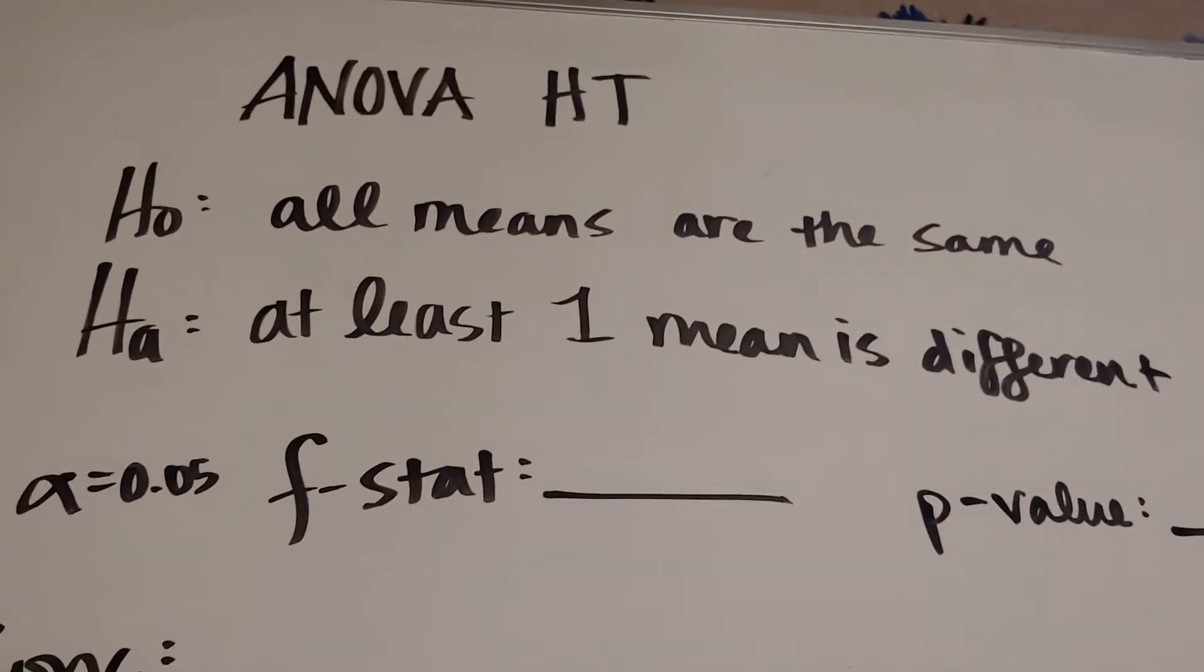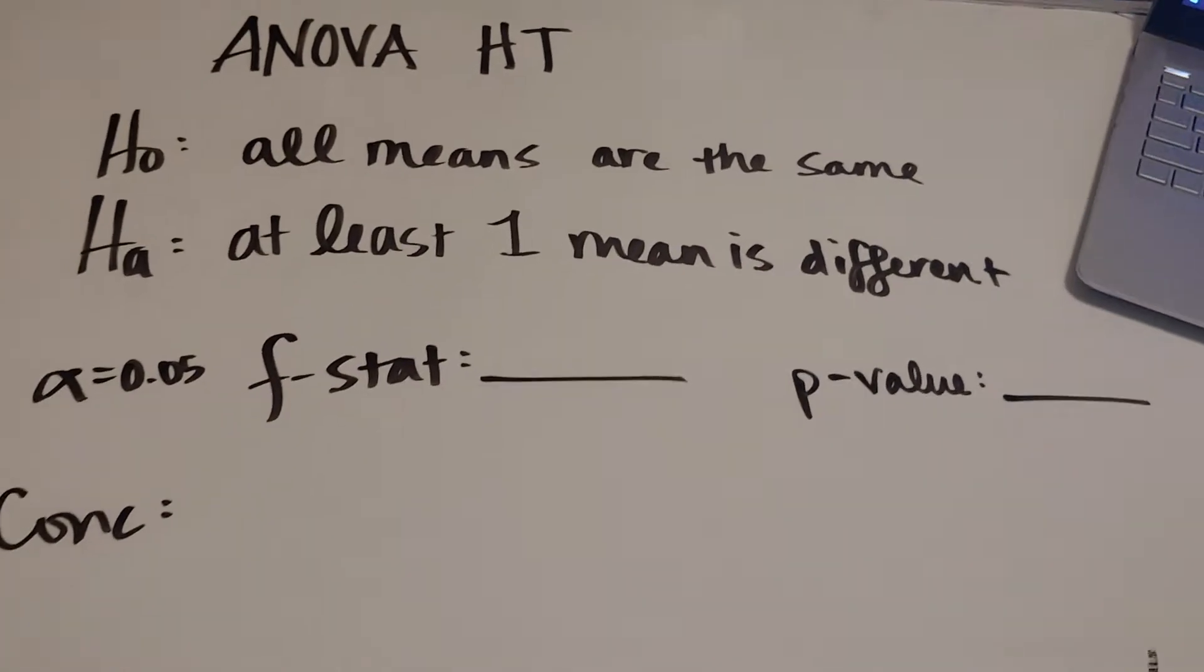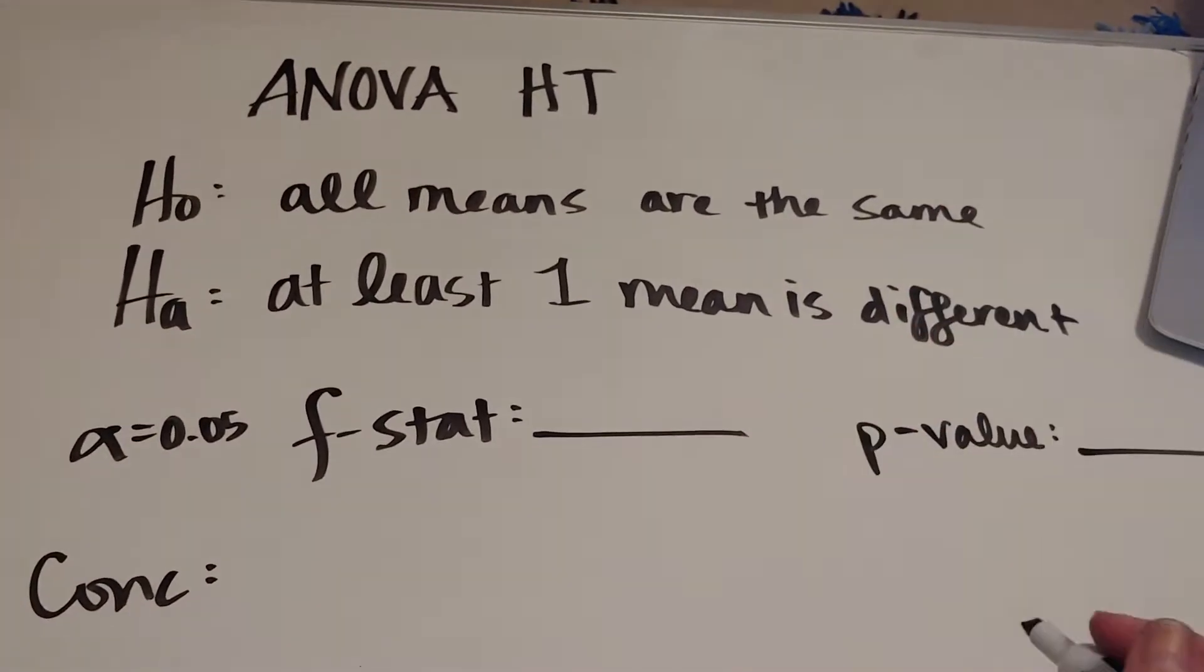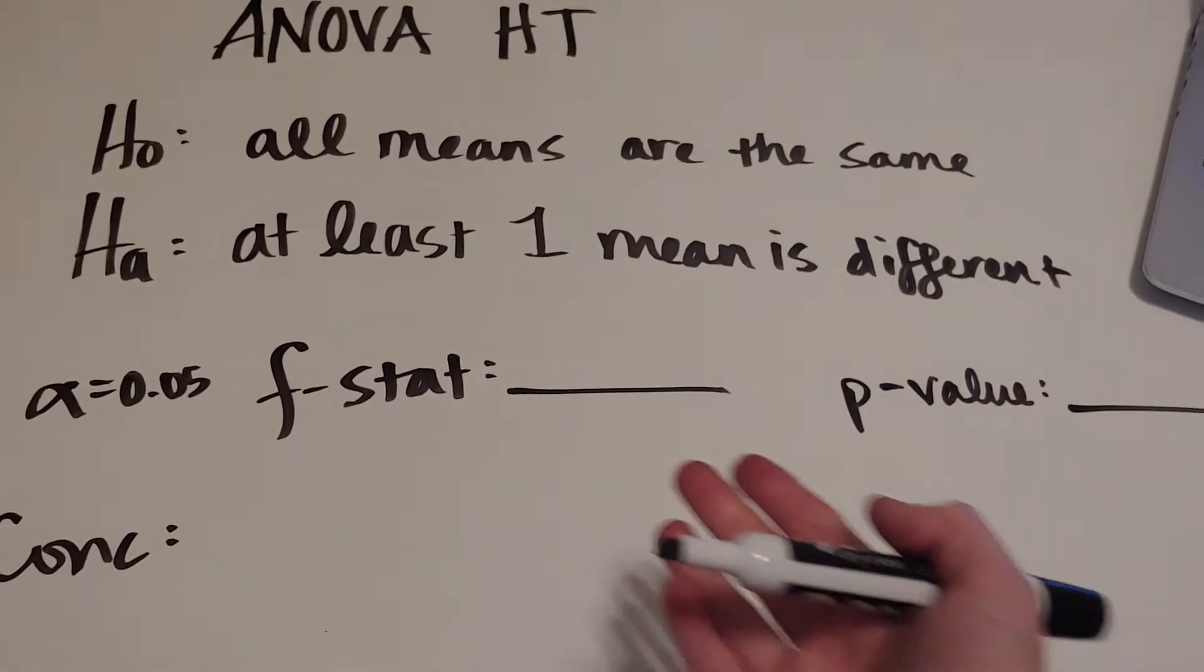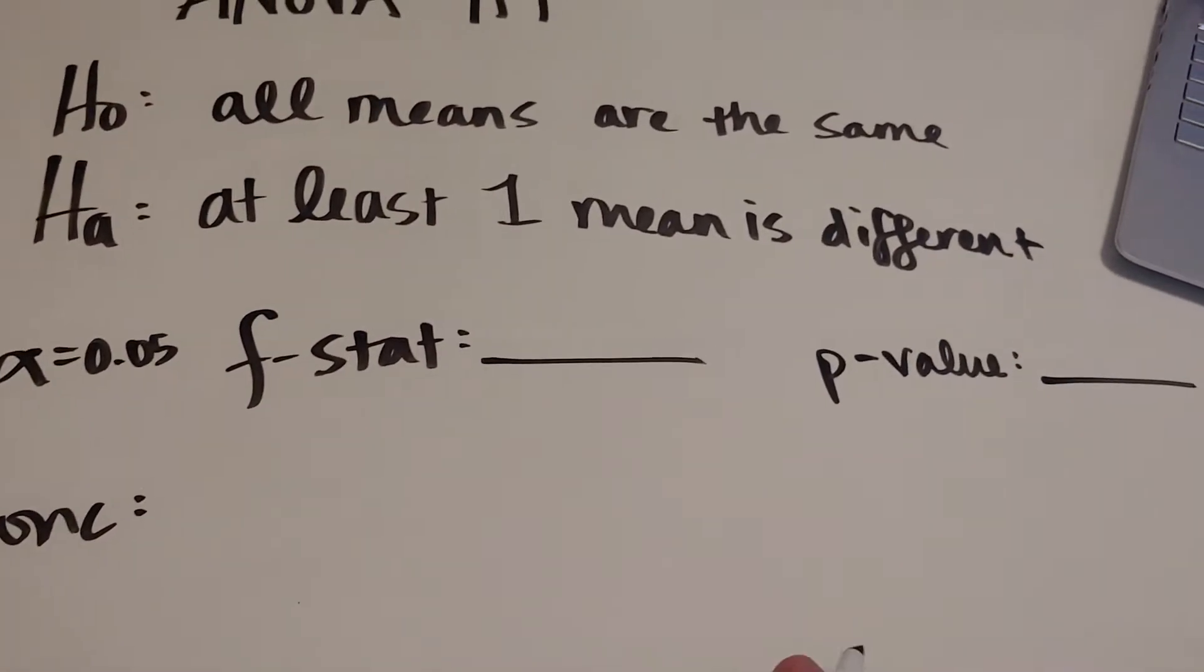I'm going to do one more ANOVA test example using my age data. As you can see, my canvas is blank. I've got my all means are the same, at least one mean is different, my F-STAT, my p-value blank that I'm ready to fill in, and then my conclusion.